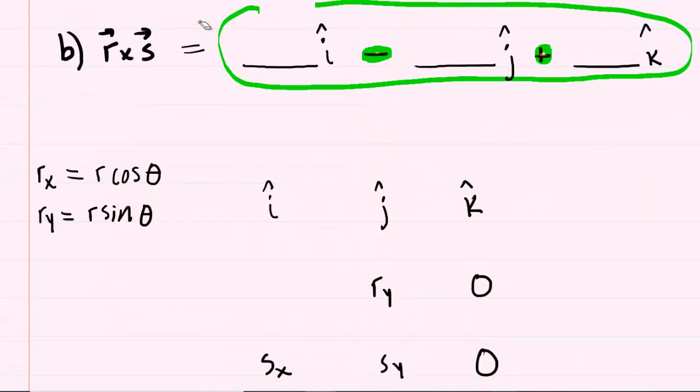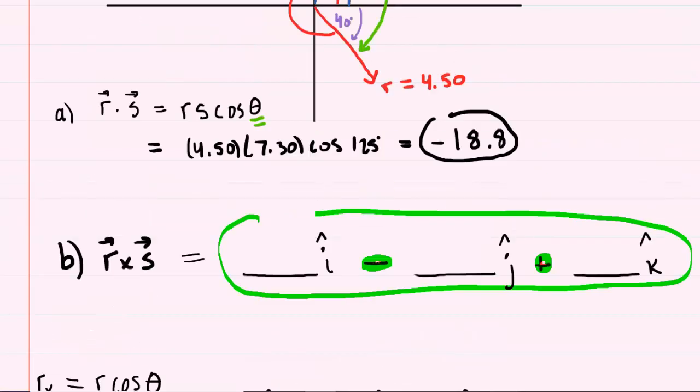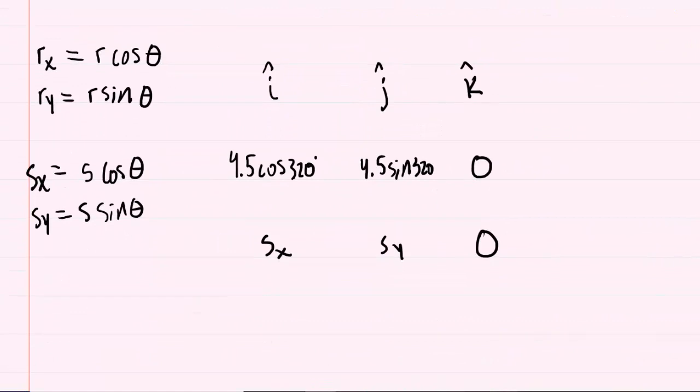Now, as for the x and y components, we remember that the x component for vector r would be its magnitude times the cosine of the given angle, and then the y component would be the magnitude multiplied by the sine of the given angle. Let's fill in the x component. We're going to take the magnitude of vector r, which was 4.5, and multiply that by the cosine of 320 degrees. And then for the y component of vector r, we're going to have 4.5 times the sine of 320. We will follow a similar procedure for vector s. The magnitude of vector s was 7.3, and its angle was 85 degrees.